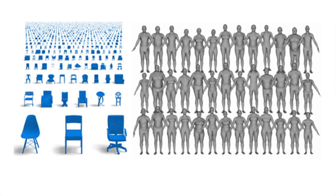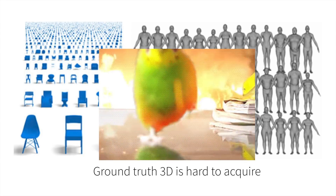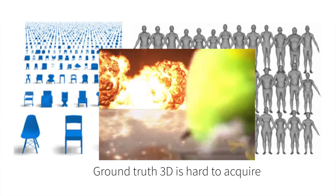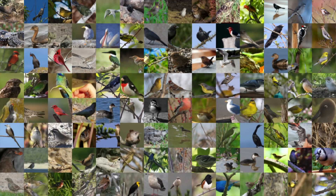Previous approaches require this knowledge in the form of ground truth 3D shapes, either synthetic shapes from artists or natural shapes obtained through scans. Unfortunately, this approach of obtaining scans may be practically challenging for many animate objects, as they may be unwilling to cooperate with our desires to scan them. Since ground truth 3D is hard to acquire, instead we propose to use a more natural form of supervision in the form of annotated image collections.